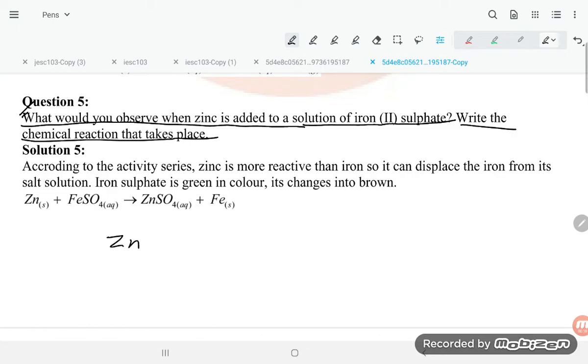When zinc (Zn) is added to a solution of iron sulfate (FeSO4), in the reactivity series, zinc's position is above iron, so zinc will displace the iron.